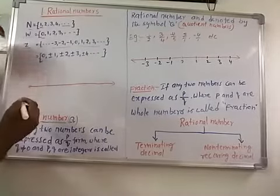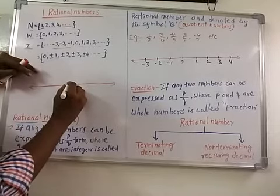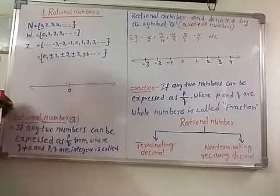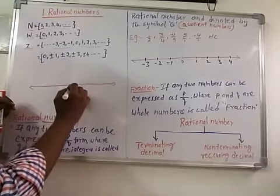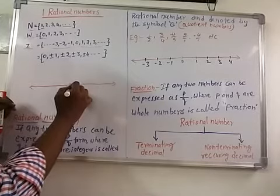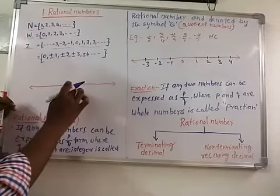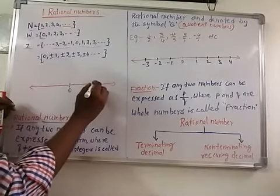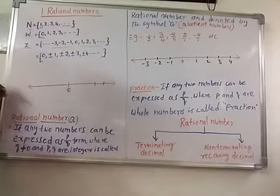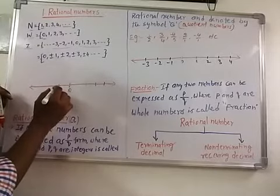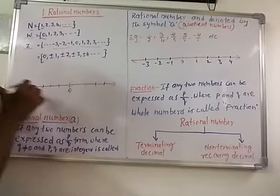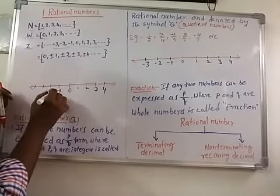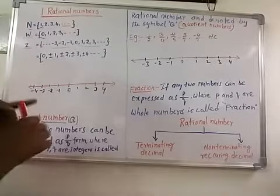Now we represent integers on a number line. To draw a number line, draw a line and mark the midpoint as 0. On the right side of 0, mark equal distance points as 1, 2, 3, 4. On the left side of 0, mark equal distance points as −1, −2, −3, −4.